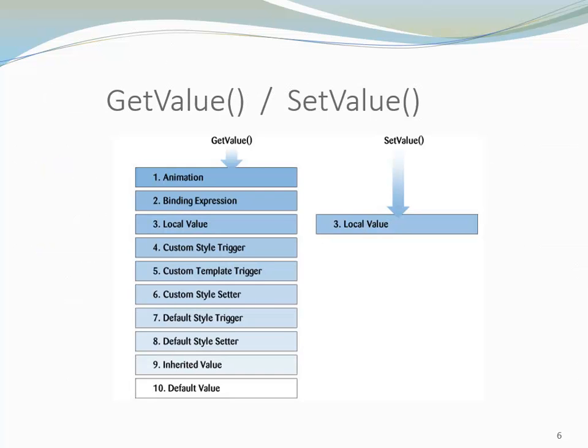Let's have a look at what is happening when this GetValue method is called. So the first thing that it is checking is whether there is an animation going on. If there is an animation that affects the property value, the property value is updated depending on the stage of the animation.